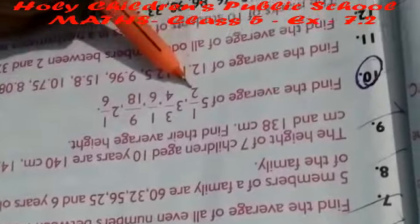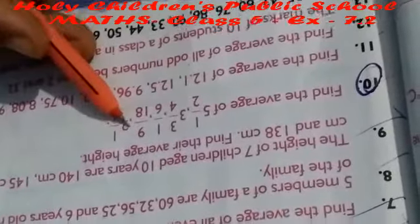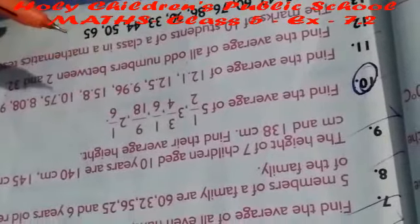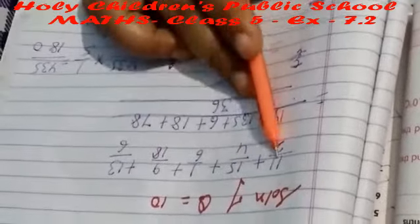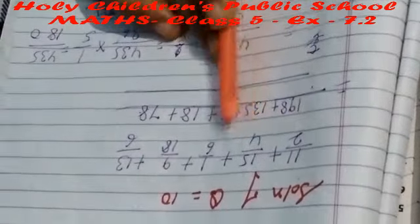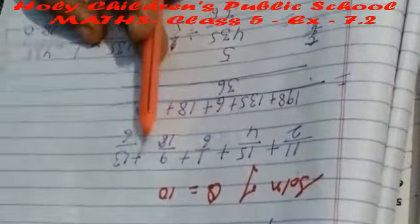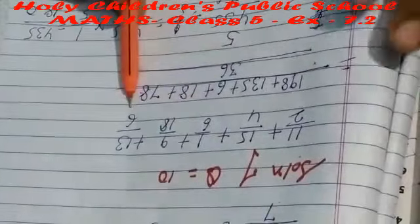5½: 5 × 2 = 10, 10 + 1 = 11, so 11/2. Next, 3¾: 3 × 4 = 12, 12 + 3 = 15, so 15/4. Next, 1⁄6: 6 × 2 = 12, 12 + 1 = 13, so 13/6. Then we write the expression as 11/2 + 15/4 + 1/6 + 9/18 + 13/6.